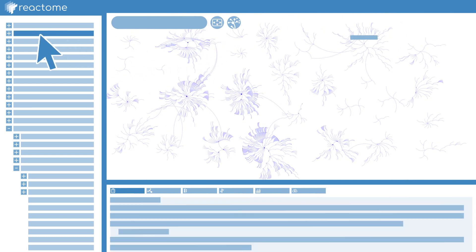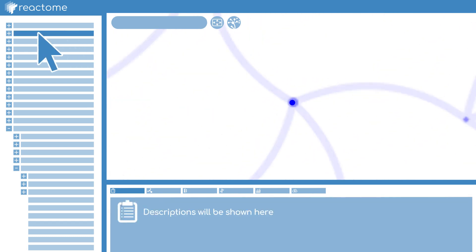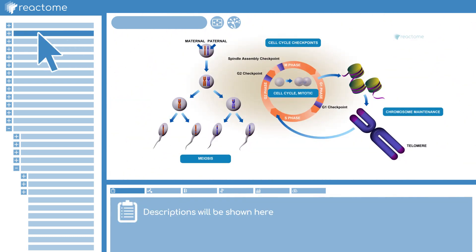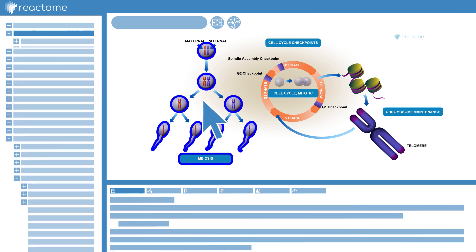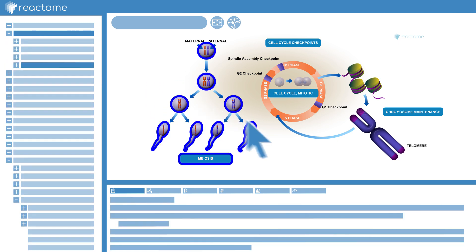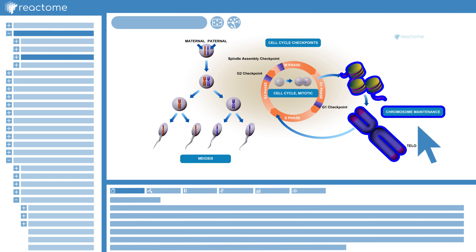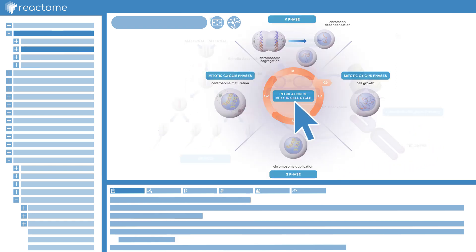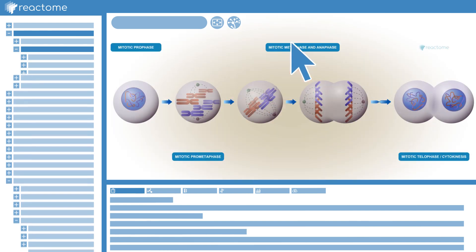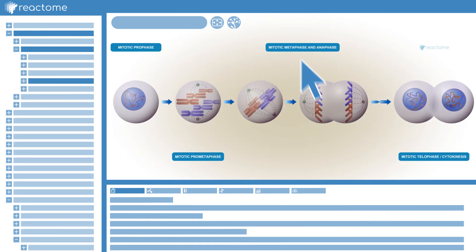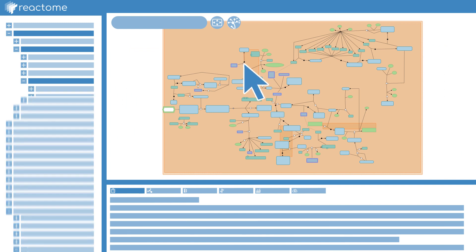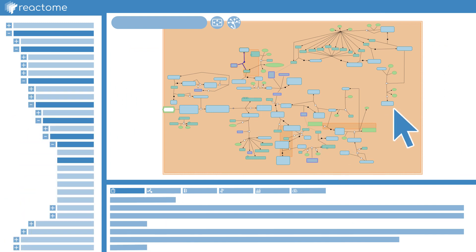We double-click in a pathway at the top of its hierarchy and the graphic panel will show you an enhanced high-level diagram, where an interactive illustration provides context of the cellular processes. Each area in the illustration represents a sub-pathway in this level of the hierarchy. You can browse the topic this way too to find the reaction you are looking for.